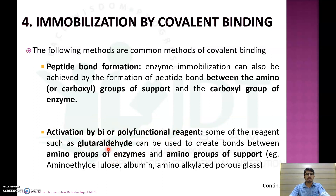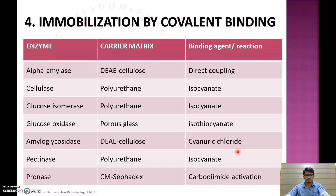Reagents like glutaraldehyde can be used to create a bond between the amino group of the enzyme and the amino group of the support, such as aminoethyl cellulose, albumin, or aminoalkylated porous glass.